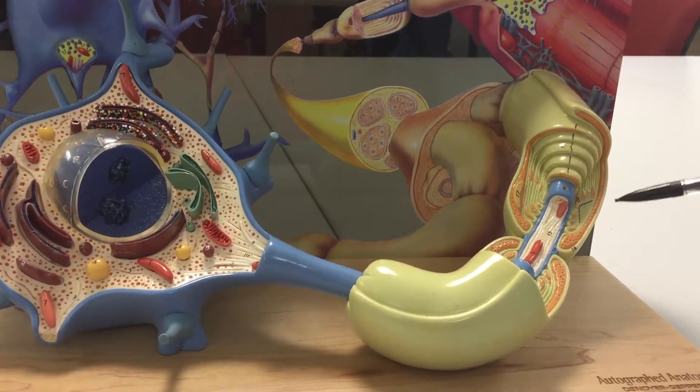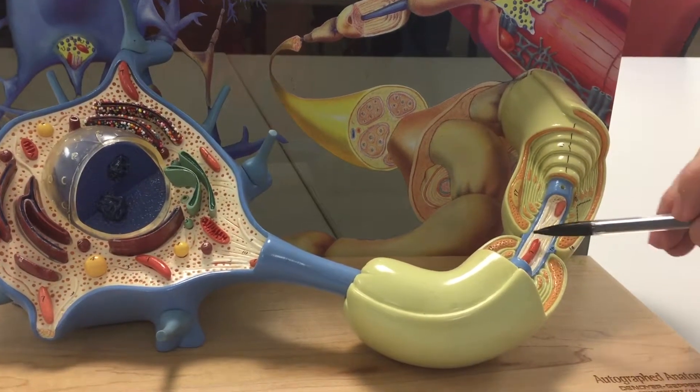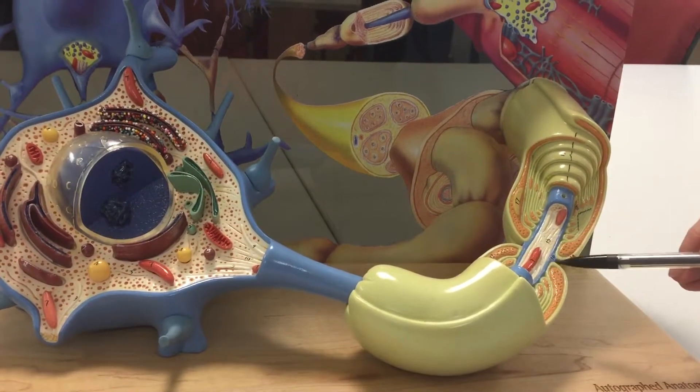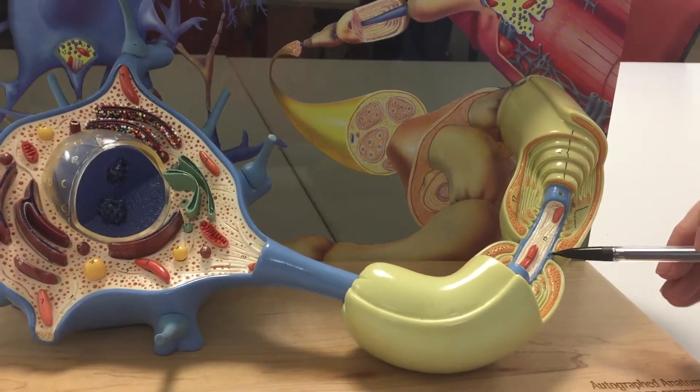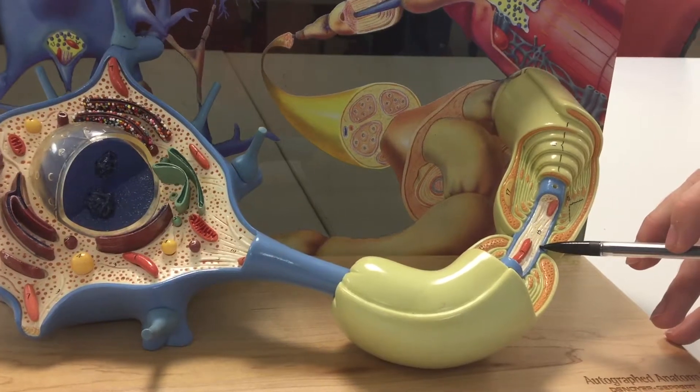This myelin sheath has a gap in it. As you can see here where there's no myelin, that gap between the myelin sheaths is called a node of Ranvier.